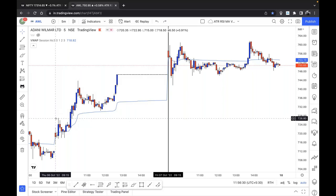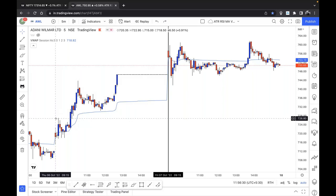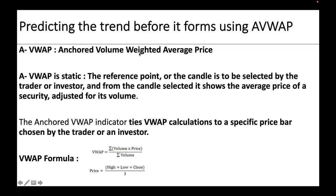What is the difference between VWAP and AVWAP? AVWAP stands for Anchored Volume Weighted Average Price. The key difference is: VWAP is dynamic and AVWAP is static. AVWAP is static because we define the reference point ourselves — it does not change every day.